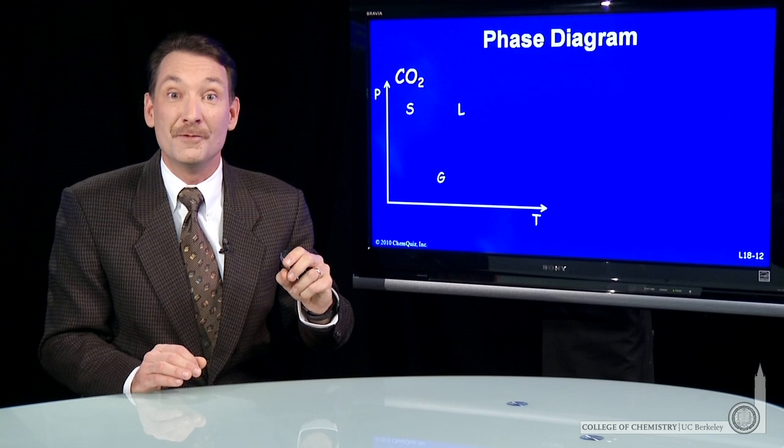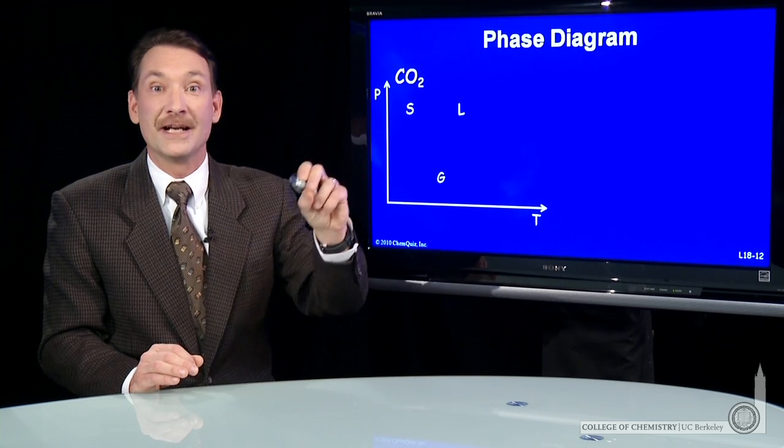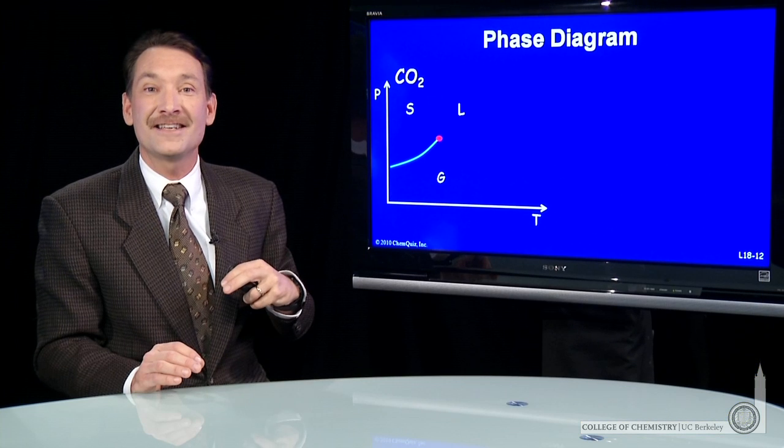Now there's also the equilibrium regions where solid and gas are in equilibrium, or liquid and gas are in equilibrium. Those are plotted as lines on the phase diagram. Every point on this line, the solid and the gas are in equilibrium.